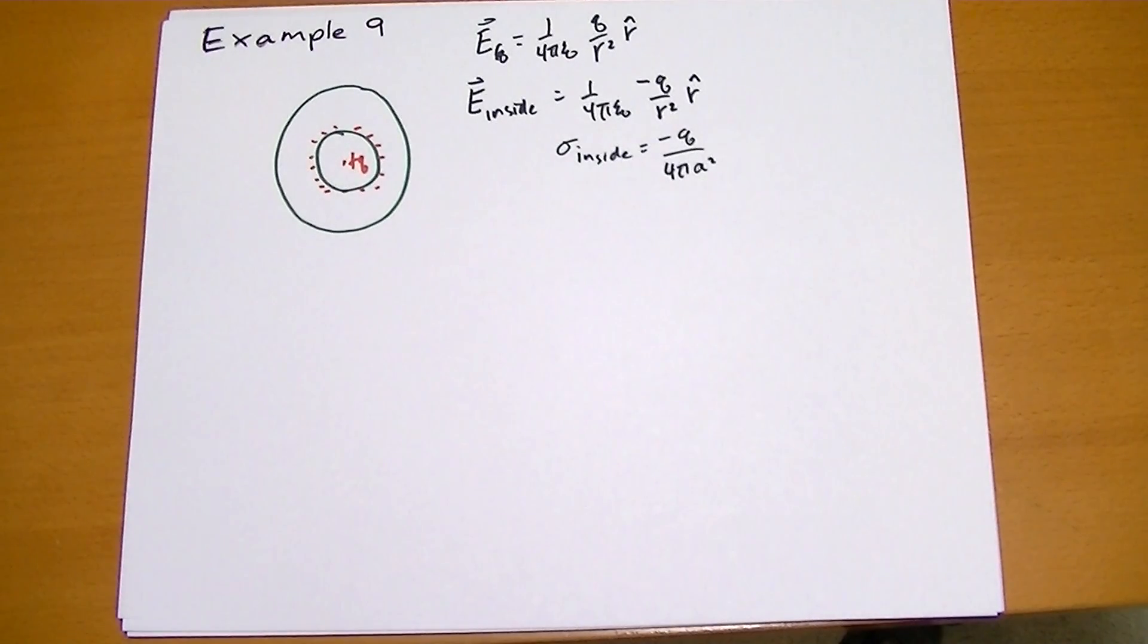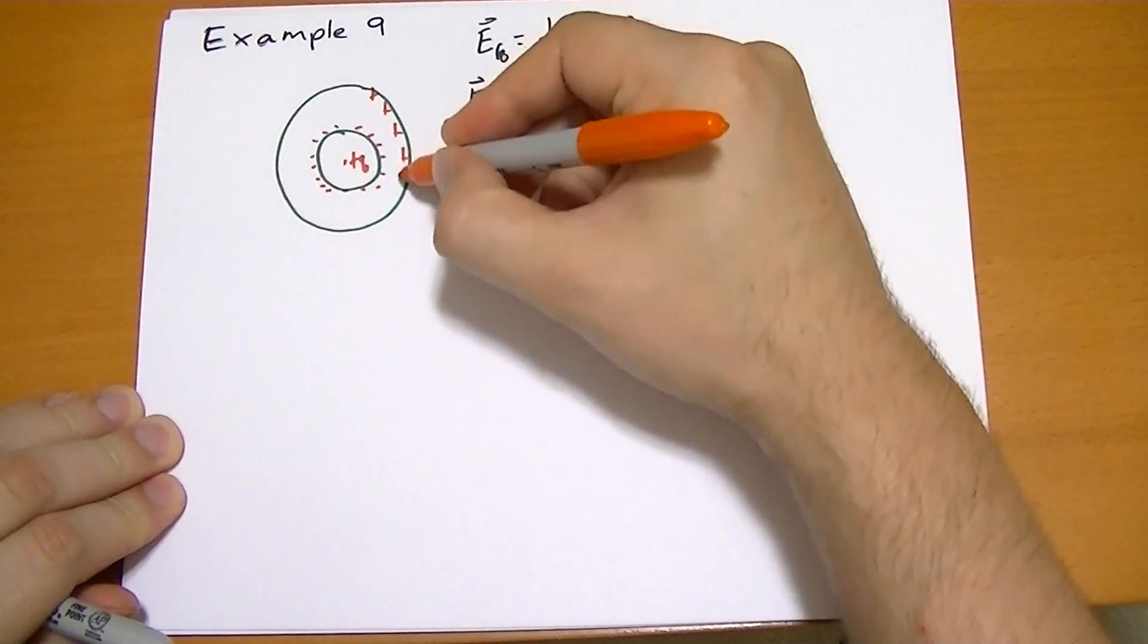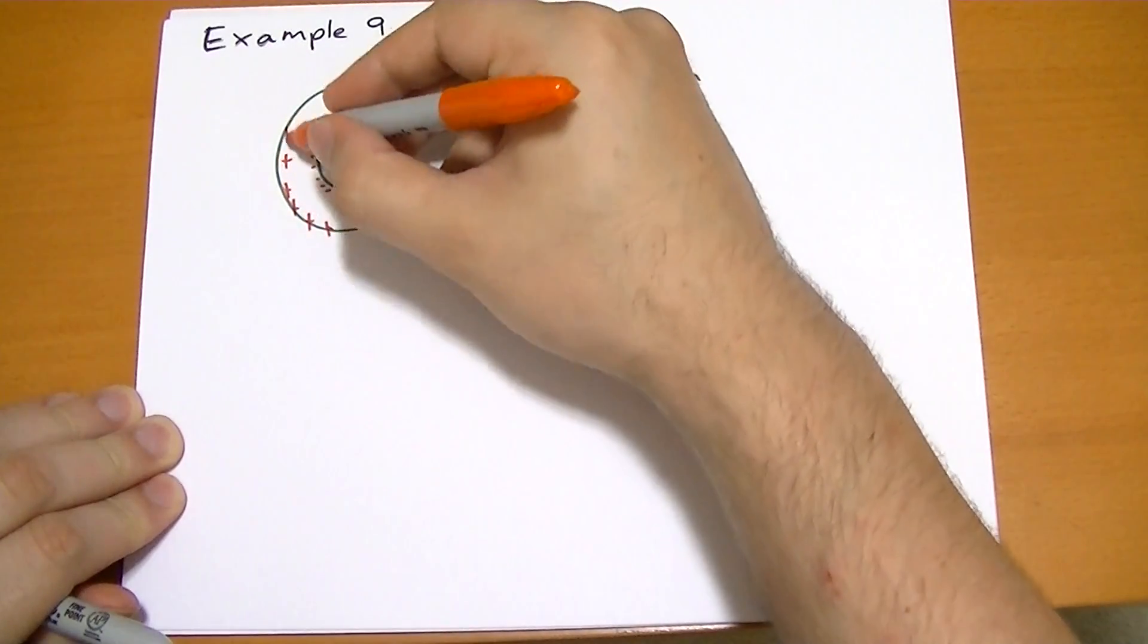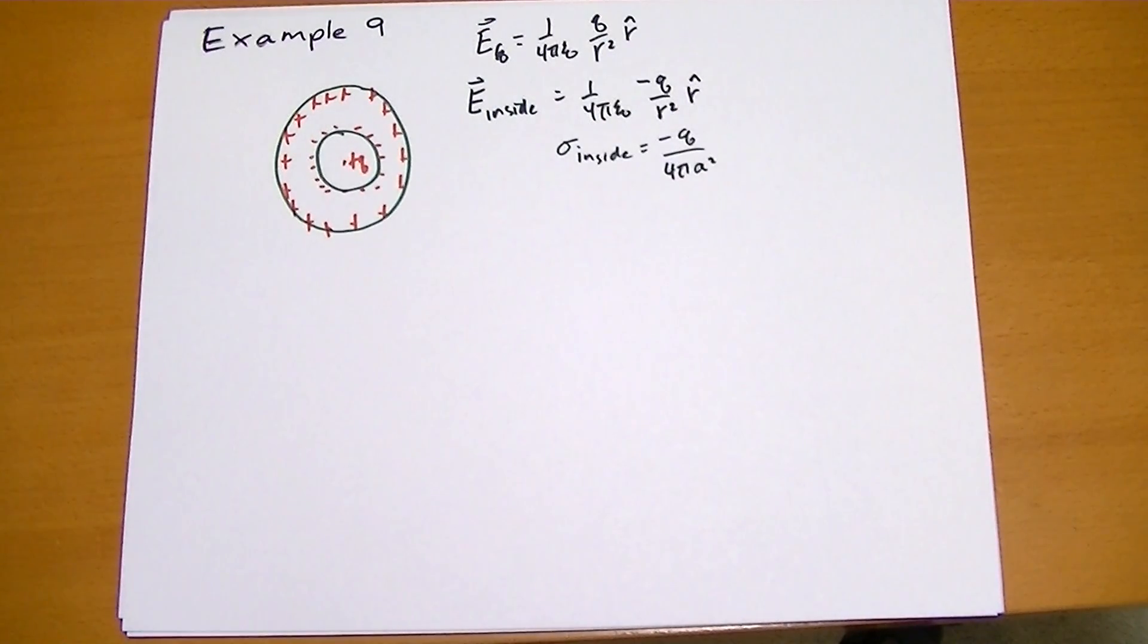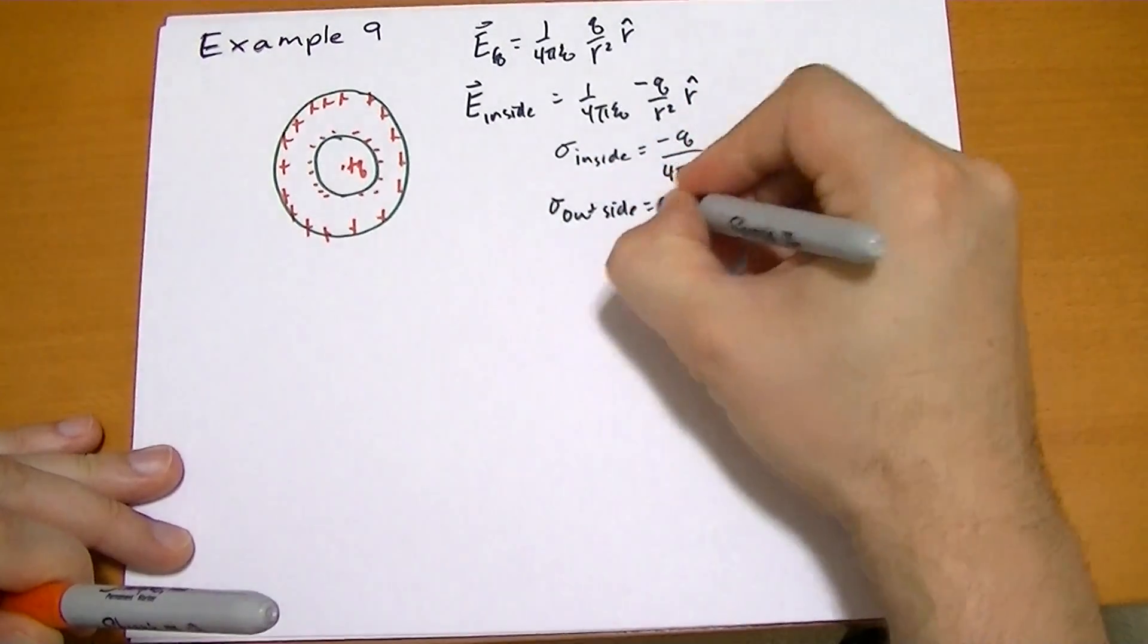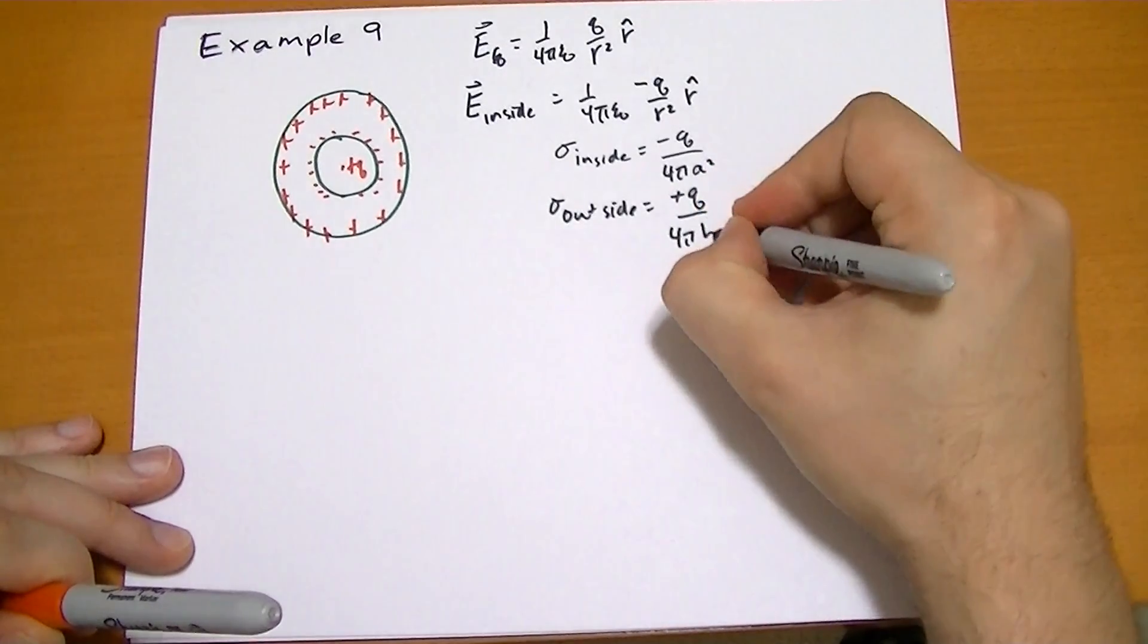Now because this sphere does not have a net charge, we have to have a positive charge on the other surface. So all the plus is over here. And it has to be exactly opposite to the charge on the inside. So sigma outside is plus Q over 4 pi B squared.